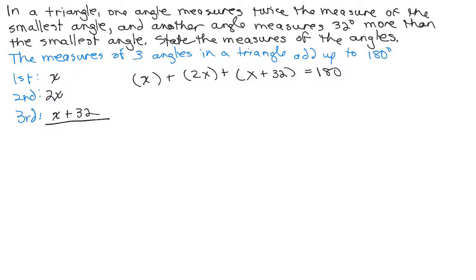You could add it right here. The three angles, since I lined up the X's, I could say 4X plus 32 equals 180, which is what I would get here. X plus 2X plus X plus 32, the coefficients of X are 1, 2, and 1. That's 4X plus 32 equals 180.